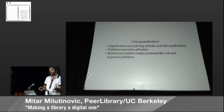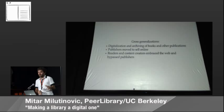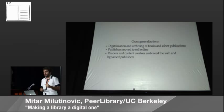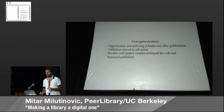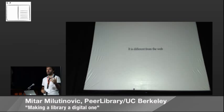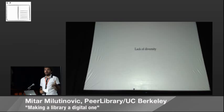If I generalize very grossly, my feeling is that what's happening currently on the web is three things: we are digitizing books and putting them into digital archives which don't have any interaction around them; we have publishers moving online and selling content; and we have readers and creators who embrace the web and bypass publishers, publishing on blogs and other platforms. And that's why our artifacts — books and everything else — are different from the web. They're not linked. We have separate communities.